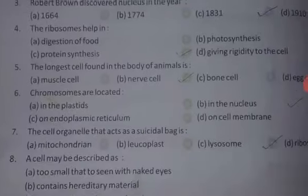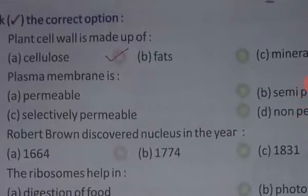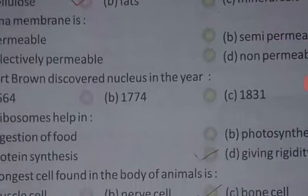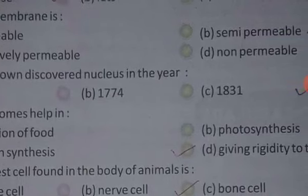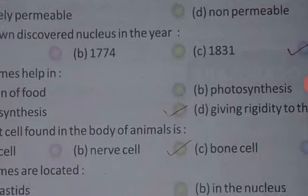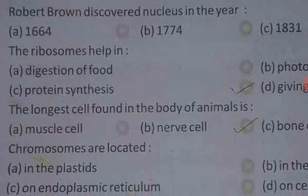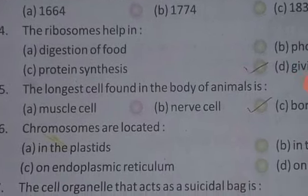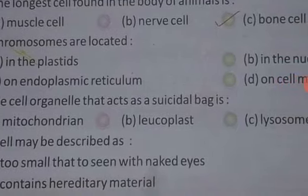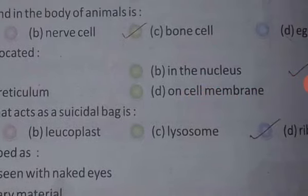Good morning children, today we will complete the exercise of chapter cell organization. The first is MCQ: plant cell wall is made up of cellulose, correct answer is cellulose. Plasma membrane is semi-permeable membrane. Robert Brown discovered nucleus in the year 1831.